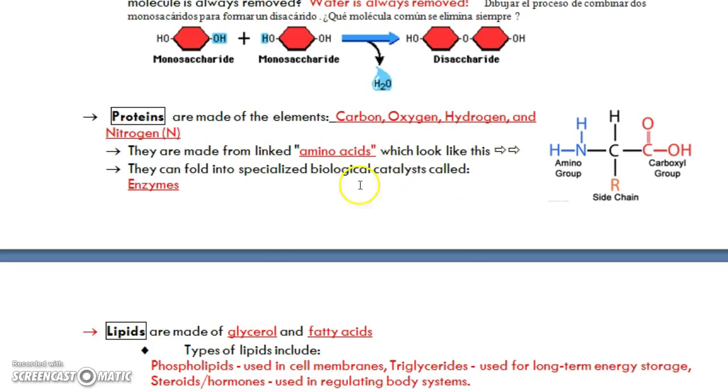Proteins can fold up into lots of different shapes. One of those shapes can make enzymes. Remember, we have four different structures. Primary, secondary, tertiary structures for proteins.